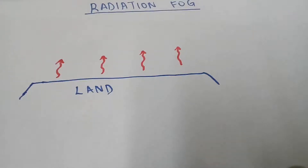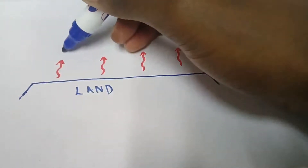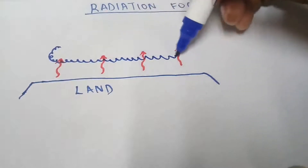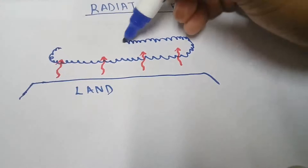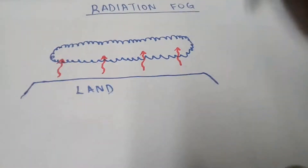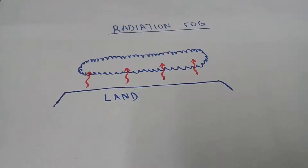The air above the land reaches the dew point temperature — the dew point. The air above the ground reaches the dew point, forming radiation fog, forming water droplets. The air above the ground will form cloud-like water droplets because it has gone through the condensation process.